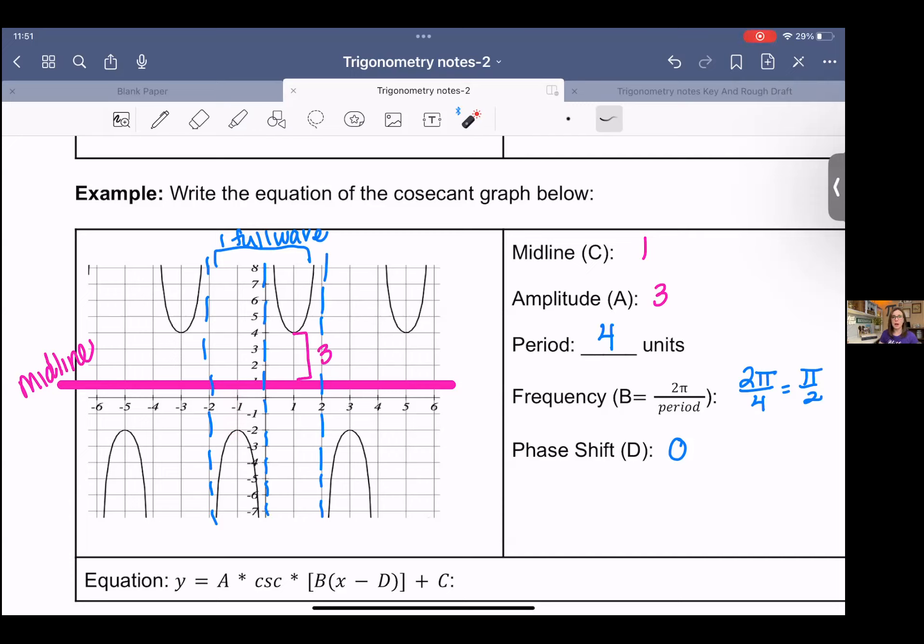So that cuts it in half, and then from the midline to the next height or whatever is three, and also three here. So in either case, we have a height of three, so that gives us our amplitude. Period is the amount of units it takes to complete one full wave. And remember for cosecant and secant, this one was cosecant, that one full wave encompasses two U's. So I kind of mapped out one full wave here. You could have done these two instead or these two instead. It doesn't matter as long as you encompass two U's. And that is four units. So we have a period of four units. And then the frequency for cosecant is two pi over the period. So two pi over four. I went ahead and reduced it.